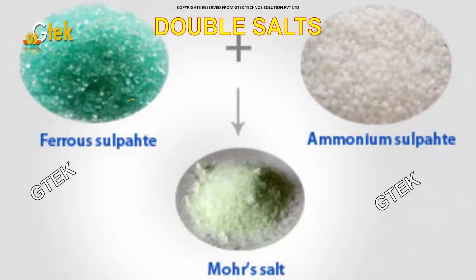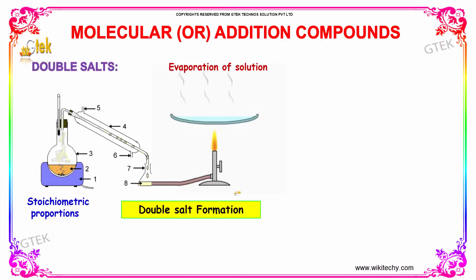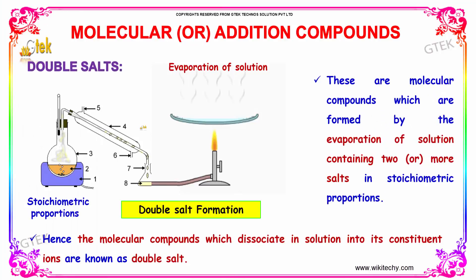Let's move on to the double salt. As I told, you got your ferrosulphate and ammonium sulfate, which reacts to give Mohr's salt. This is about the double salt.